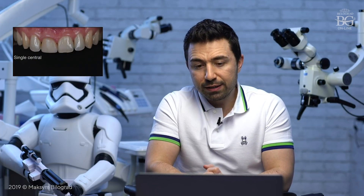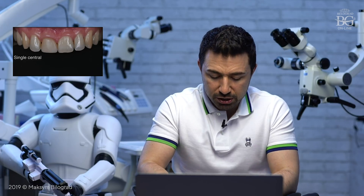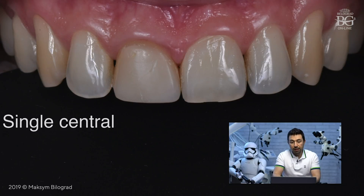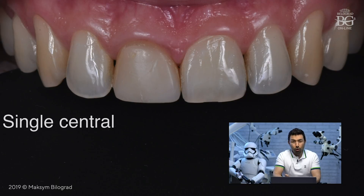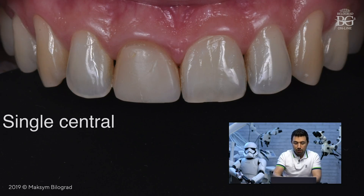Let me show you the initial clinical situation. You can see a central incisor. The patient was not happy with the appearance because the central incisor was restored with composite material that got discoloration. The patient also had some discomfort in that tooth. Our task was to solve the discomfort problem and provide a restoration that would fit in terms of color within his smile frame.